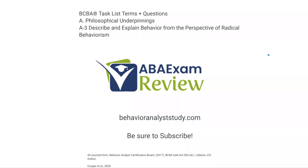Welcome back to ABA exam review in our BCBA task list study guide series. Today we're continuing philosophical underpinnings with A3: describe and explain behavior from the perspective of radical behaviorism. We're going to go through radical behaviorism, methodological behaviorism, and mentalisms. Very straightforward subject that is often misunderstood, so super important.